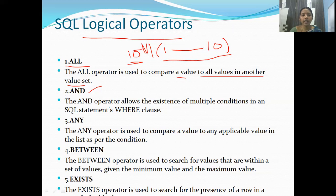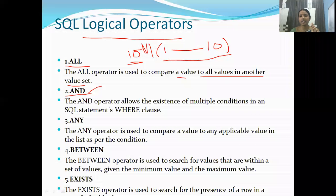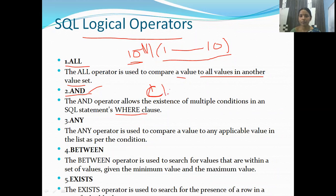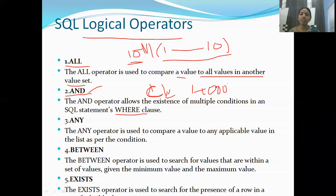The AND operator is used when you have two conditions in a WHERE clause. For example: employee designation is clerk AND employee salary must be 4000. Both conditions must be satisfied simultaneously. So you write two conditions joined by AND — one condition is the designation being clerk, and the other is the salary of 4000.